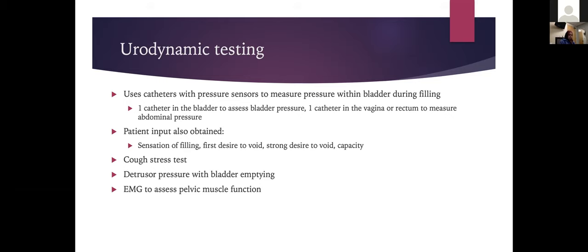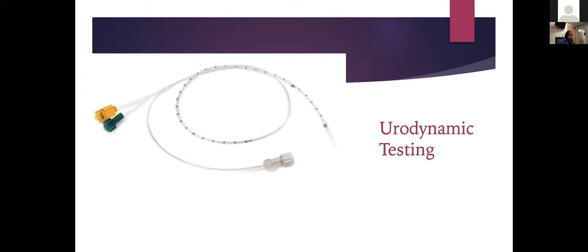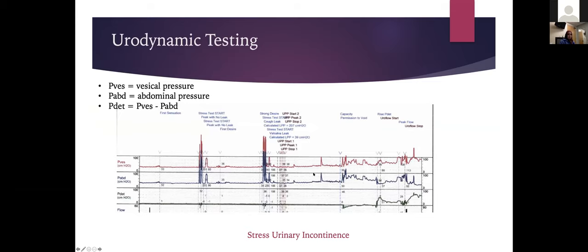This is an example of a urodynamic catheter inserted into the bladder. It has two pressure sensors — one used to measure urethral pressure specifically. The portion connected to the fluid bag fills the bladder with sterile water during testing.